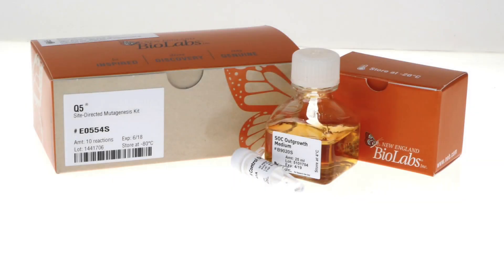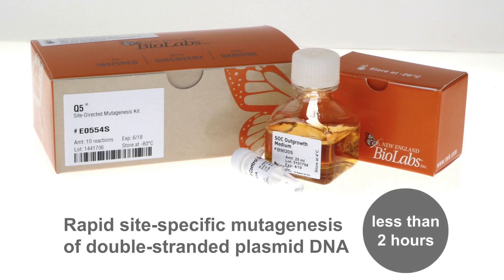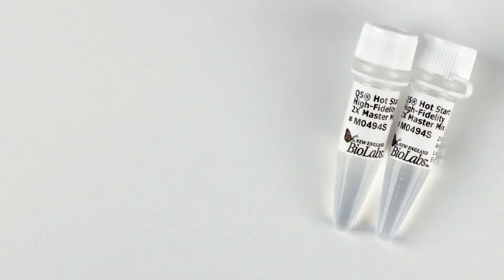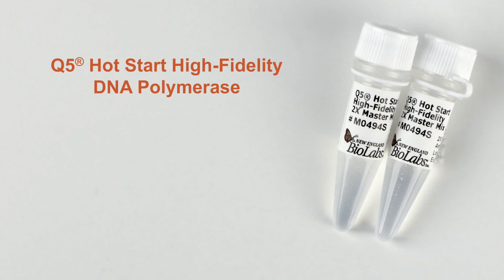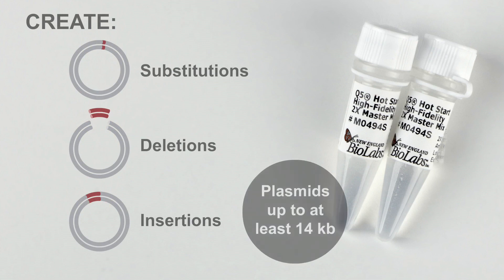The Q5 site-directed mutagenesis kit allows rapid site-specific mutagenesis of double-stranded plasmid DNA in less than two hours. The kit utilizes the robust Q5 hot-start high-fidelity DNA polymerase and custom mutagenic primers to create substitutions, deletions, and insertions for a wide variety of plasmids up to at least 14 kilobases in length.